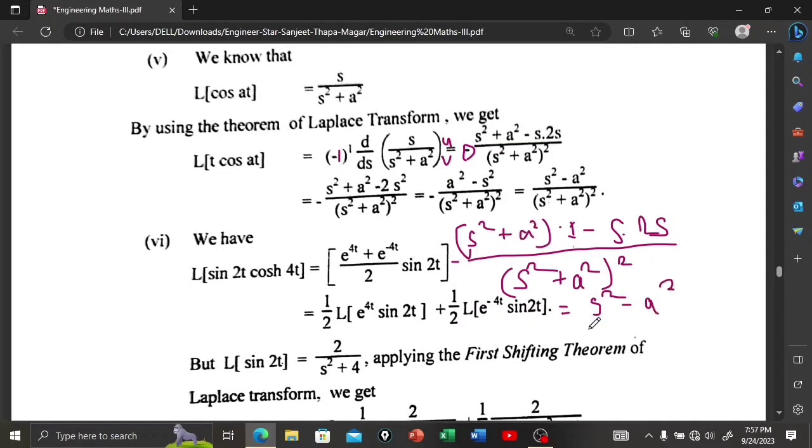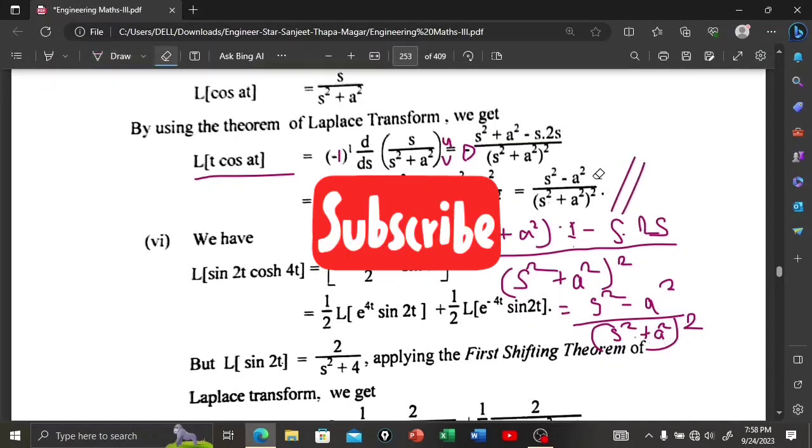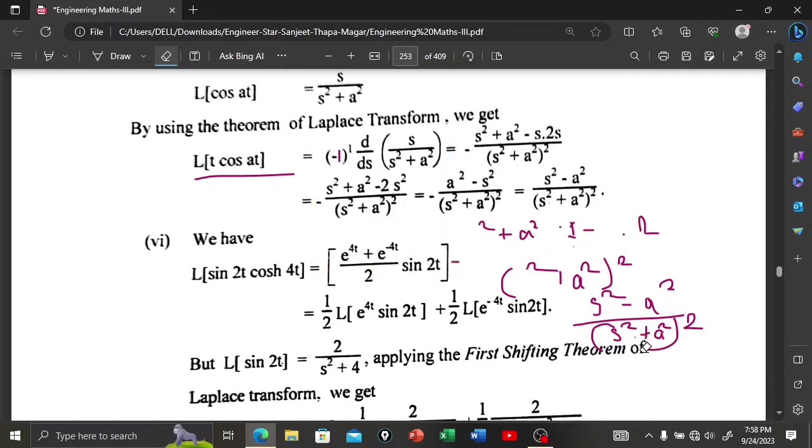Minus a² plus a² cancels. So Laplace transform of t cos(at) is (s² - a²) divided by (s² + a²)². Thank you.